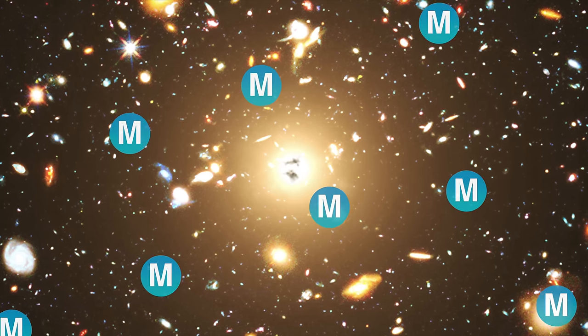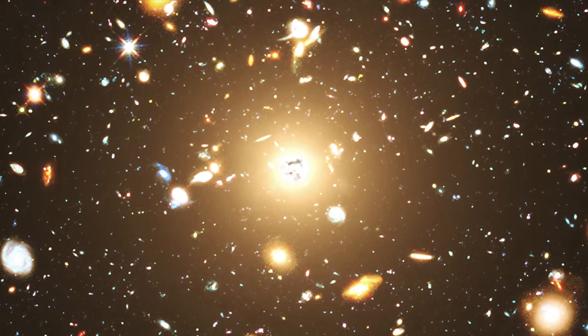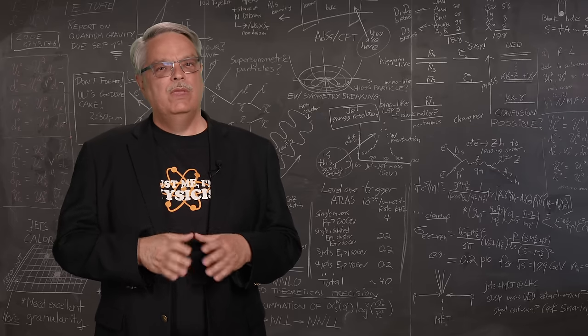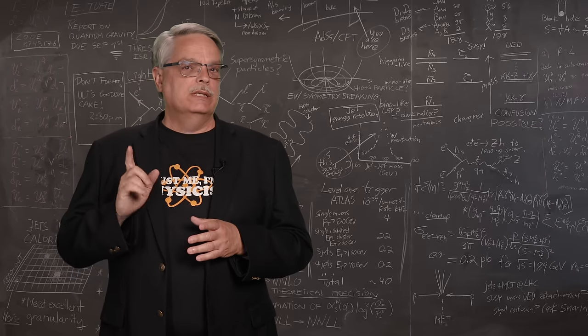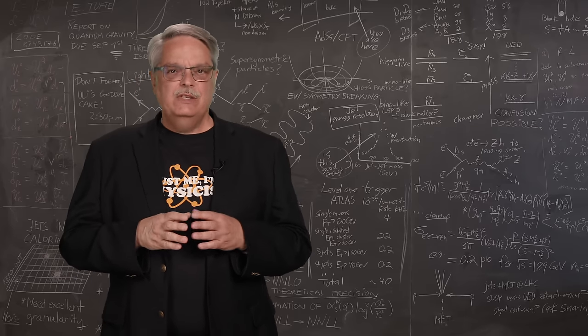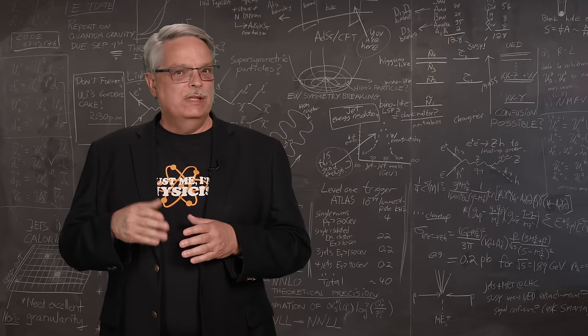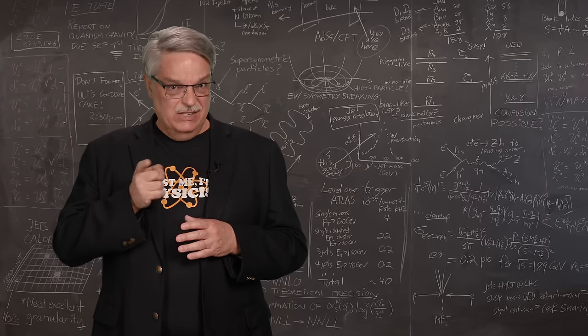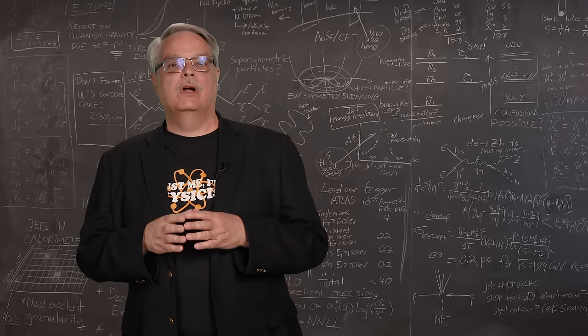Nobody knows why we live in a matter-dominated universe, but there have been many theories proposed that could explain the conundrum. One such theory is called leptogenesis. It's important to remember that we don't know that leptogenesis is correct, but it could be correct and, and this is important, it has testable consequences.